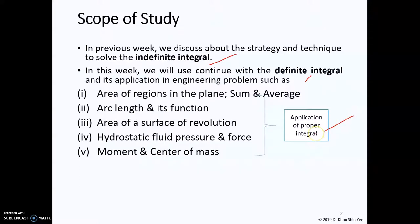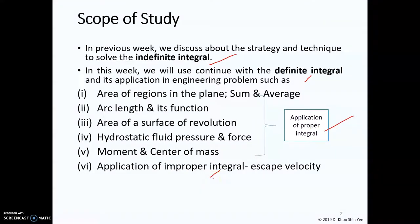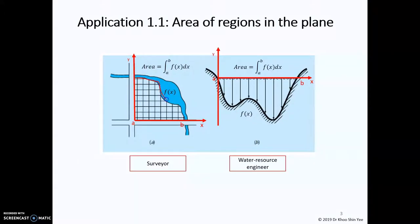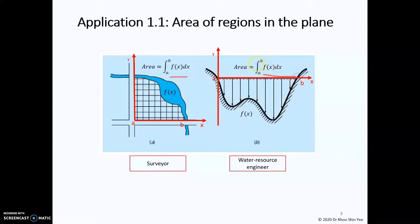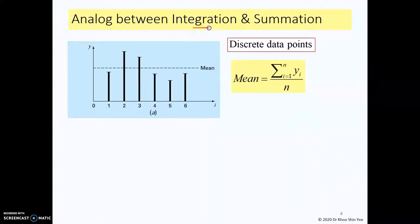You will see applications one to five where we apply the proper integral. You will also learn how to apply the improper integral, such as to find the escape velocity. We have learned that if the function f(x) is given and a and b are provided, then we can form the integration to find the area under the curve. Similarly, if f(x) is given and a and b can be measured, you can obtain the area under the curve using integration.